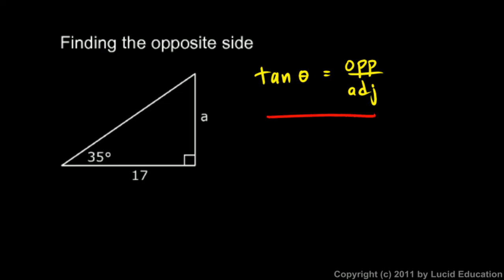The tangent of an angle is always the length of the opposite side over the adjacent side. So the tangent of this angle has to be this length, the opposite, over the adjacent. Let's write that mathematically. The tangent of this equals this over that. In this particular case, the tangent of 35 degrees equals a over 17.